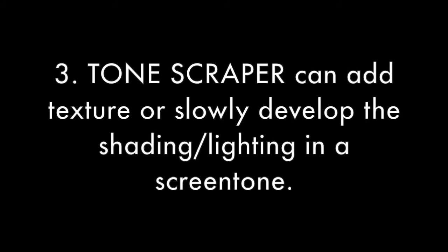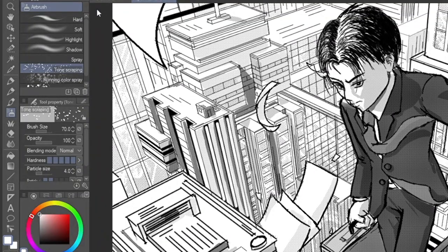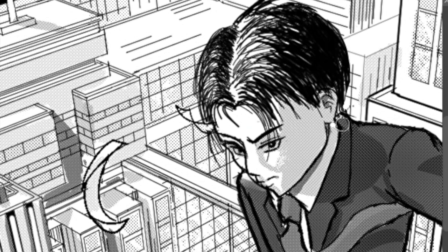Finally, moving on to our third tip: you can use the tone scraper to add texture or develop the lighting and shading of a screen tone. Sometimes you don't want a screen tone to end abruptly and want it to lighten up gradually, like for this character's face. So you can add tone by using the tone scraper brush on the tone layer, or remove tone by using the tone scraper brush on a regular layer with a white color on top of the screen tone layer.